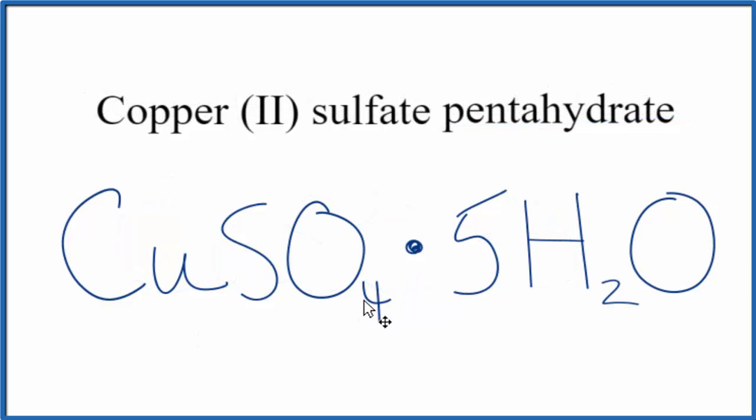So this is the formula for copper (II) sulfate pentahydrate. If we were to heat this up, we could make the water leave, and then we'd just have copper (II) sulfate. Sometimes that's called anhydrous copper (II) sulfate because there's no water. But this is the formula for copper (II) sulfate pentahydrate, and this is Dr. B. Thanks for watching.